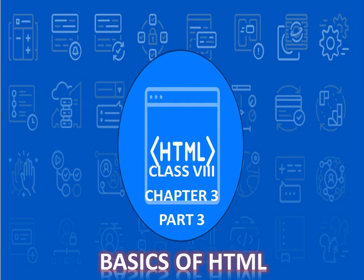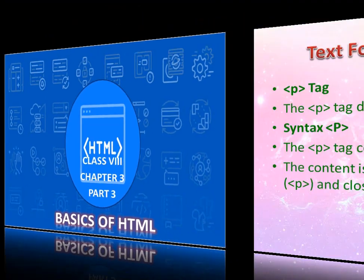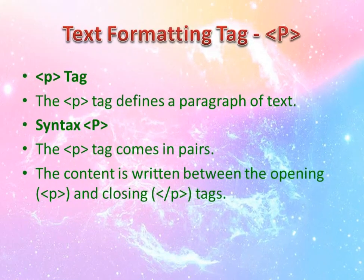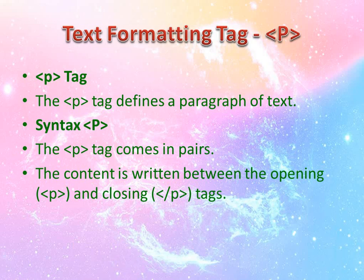In this session, we will conclude our HTML class. Now we will see the text formatting tag P. The P tag is used to specify the beginning and end of a paragraph — that is, it defines a paragraph of text. The P tag appears in pairs with an opening tag and a closing tag, slash P.